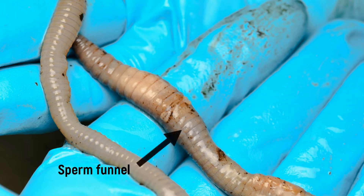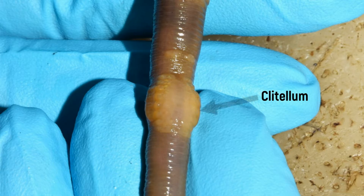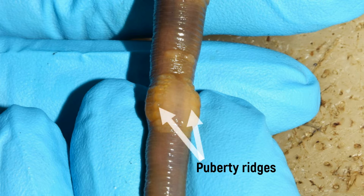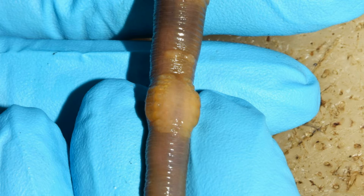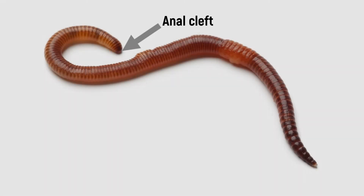From there, a funnel extends which is used for sperm cell transport. This sperm funnel extends to the clitellum. The clitellum extends over segments 32 to 37, and is saddle-shaped, with bulges on both sides of the abdomen — the puberty ridges. At the end of the body, the pygidium, lies the vertical anal cleft.